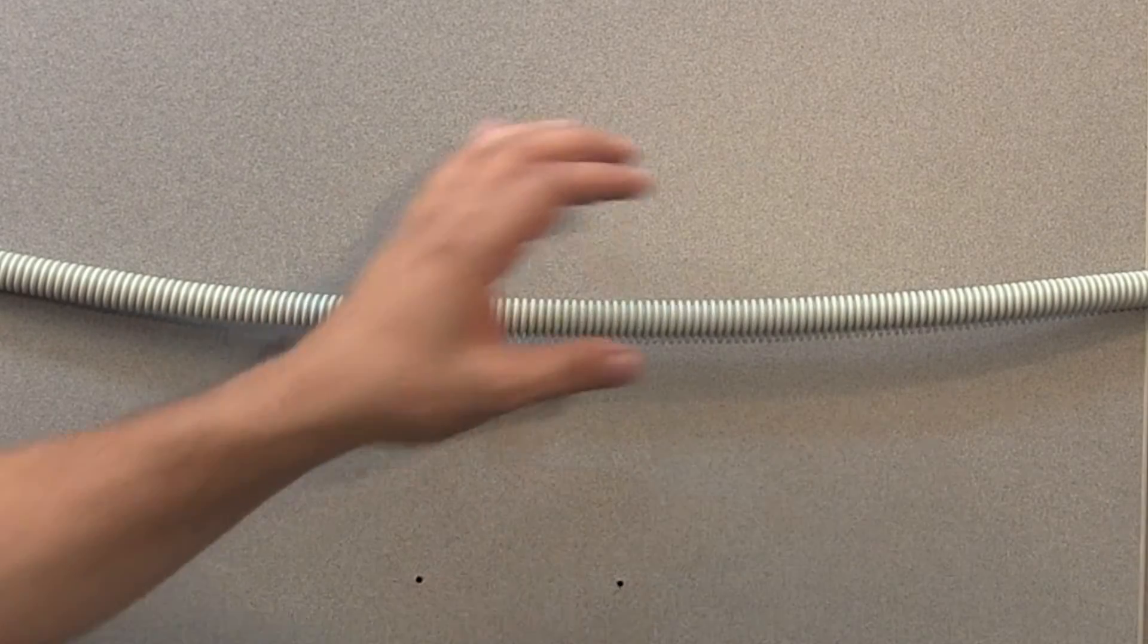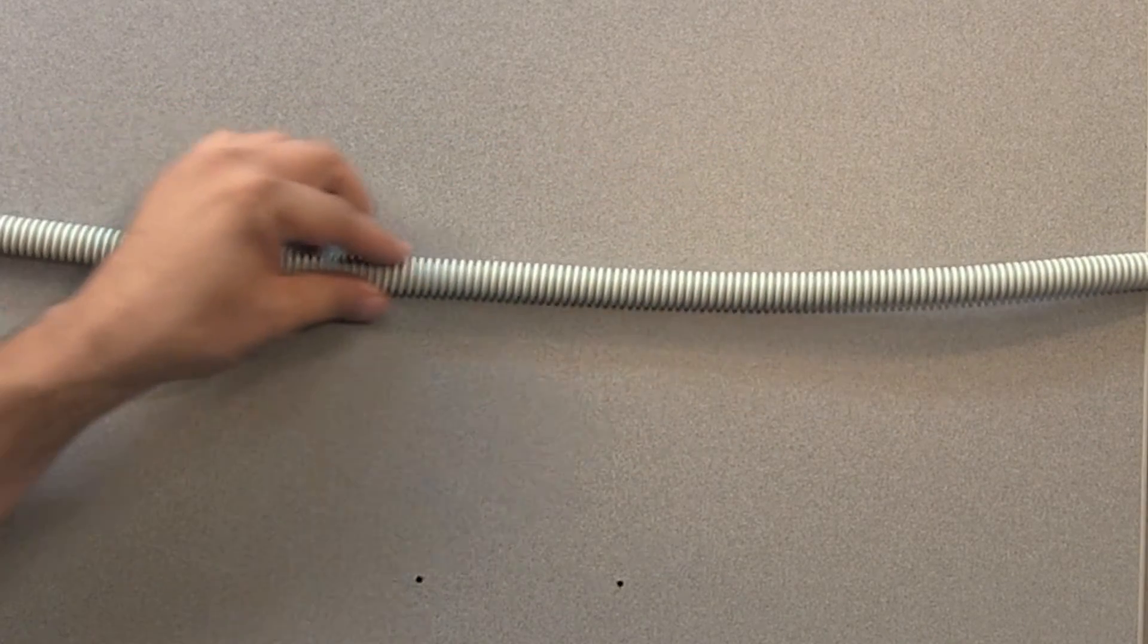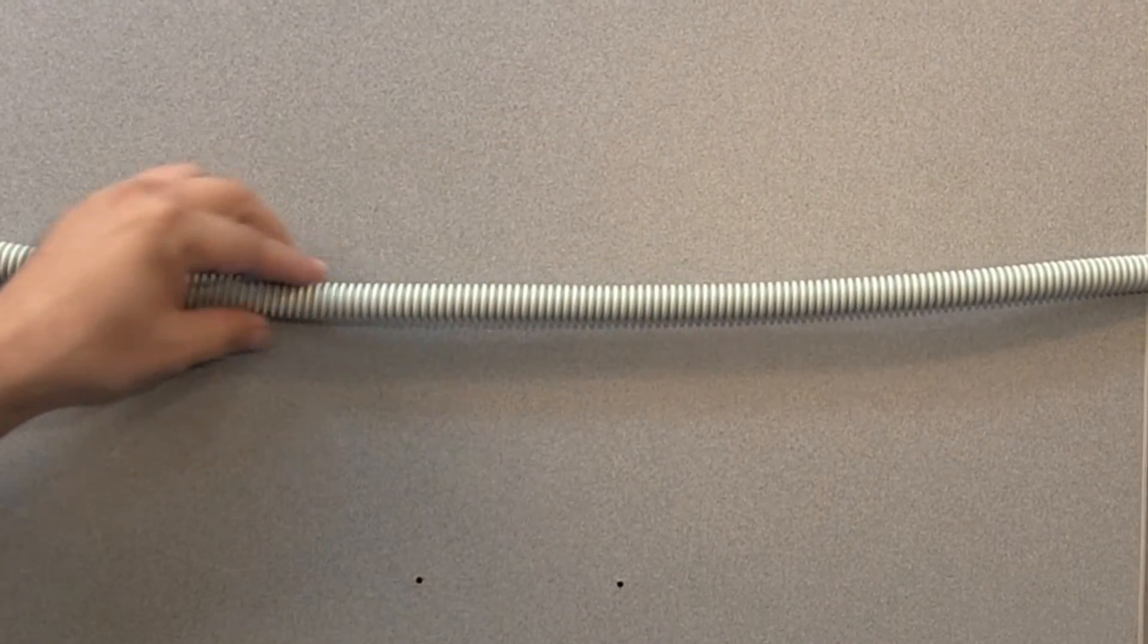We've decided to install our separator on a wall where the flexible vacuum line comes into the room, so we'll use the provided barb connectors.